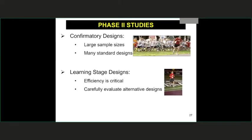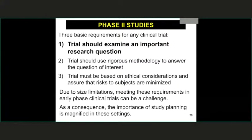I want to shift to phase two studies specifically. Here is the pictorial example of confirmatory versus learning stage designs. I'll talk about different types of phase two studies, because that's what many of you are dealing with. In phase two, we're trying to get more safety information and proof of concept. Proof of concept is difficult: if we're powering it to show efficacy, we're really doing a confirmatory phase three trial. But if we're just getting data without a clear plan, we're not really learning any new knowledge either.